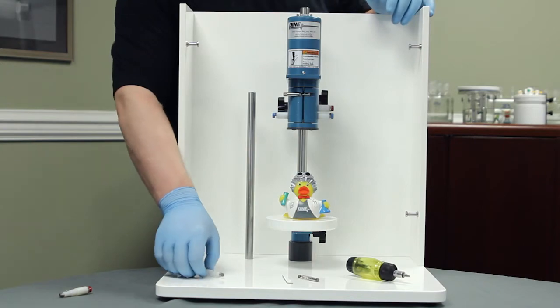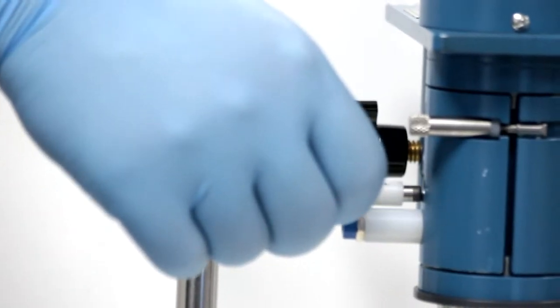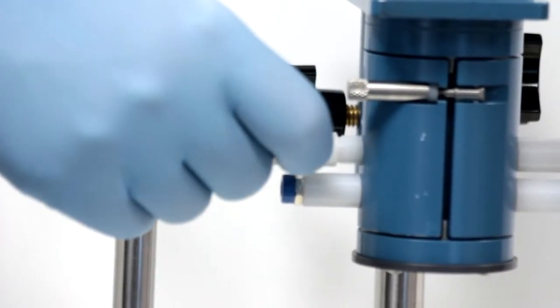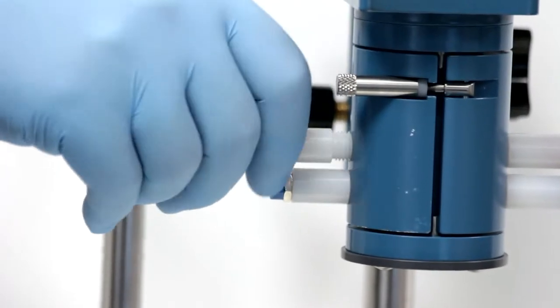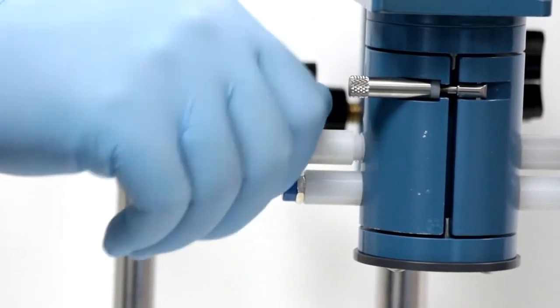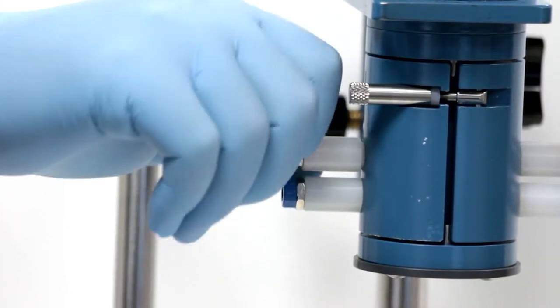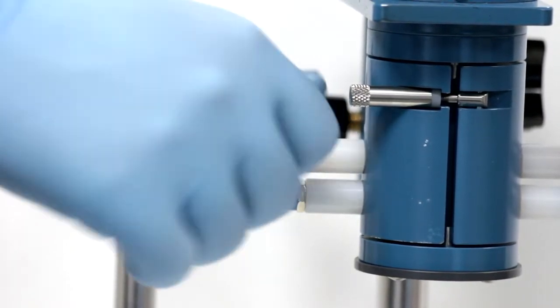Install the new brush assembly by threading it by hand into the side of the rotator. Do not use any tools to tighten this brush assembly. It needs to only be finger tight.